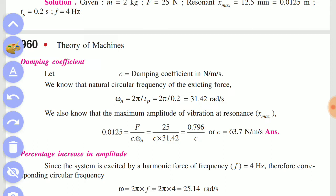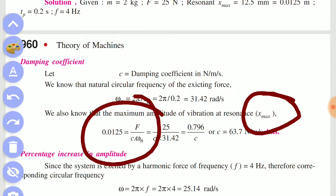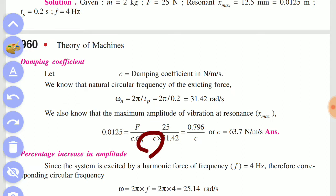c and x_max are given in the question. This is at resonance. If you get x_max and F value in the question, then you can find c. We get c equals 63.7 Newton seconds per meter. There is the answer. If you look at this path, you can see the calculation clearly.